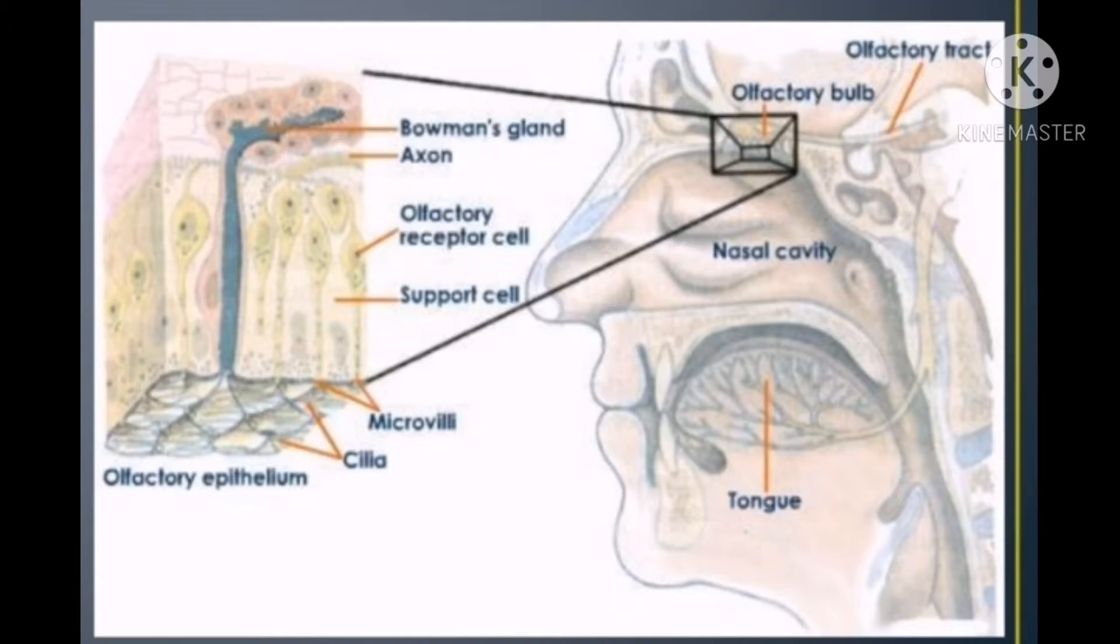The main function in the nose happens in the olfactory, which is the smelling portion of the nose where most of the lining is mucous membrane. A small segment of the lining contains the nerve cells, which are the actual sensory organs. The nerve cells into the nasal cavity are covered only by a thin layer of moisture. The moisture dissolves microscopic particles that the air has carried into the nose from odor emitting substances, and the particles dissolved in the fluid stimulate the olfactory nerve cells chemically.